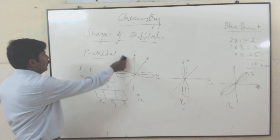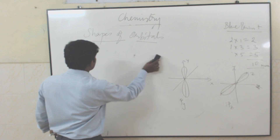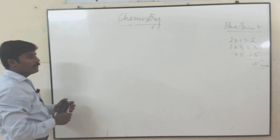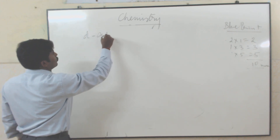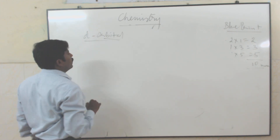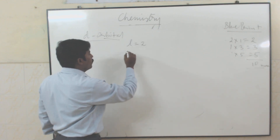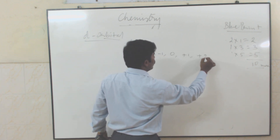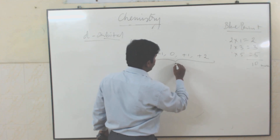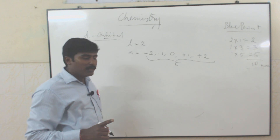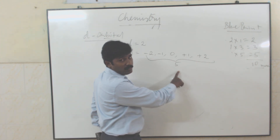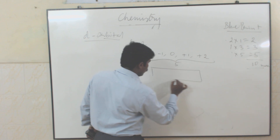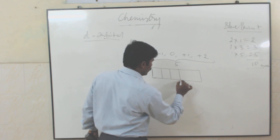The next one is d orbital. For d orbital, l value is equal to 2. When l equals 2, the m values go from minus 2, minus 1, 0, plus 1, plus 2 — all together 5 orientations possible. The magnetic quantum number tells us how many orientations there are: 5 orientations possible. So the d orbital splits into 5 types.